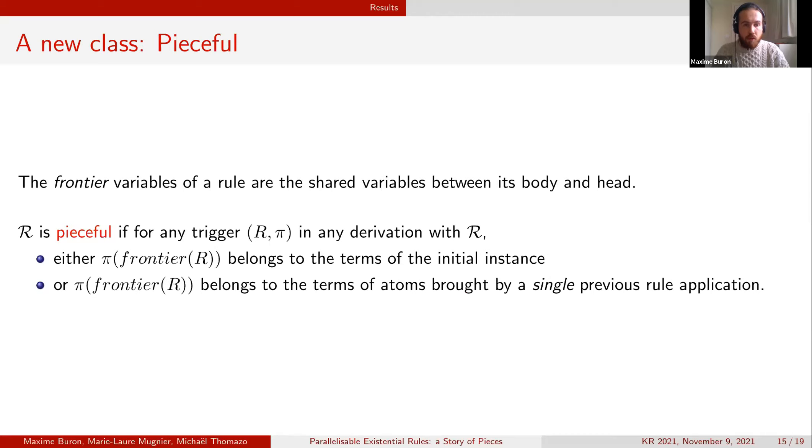That's leading us to the notion of peacefulness. We say that a rule is peaceful if for any trigger in a derivation on this rule set, the frontier variables of a rule will be mapped to the terms of the initial instance or of atoms brought by a single previous rule application.